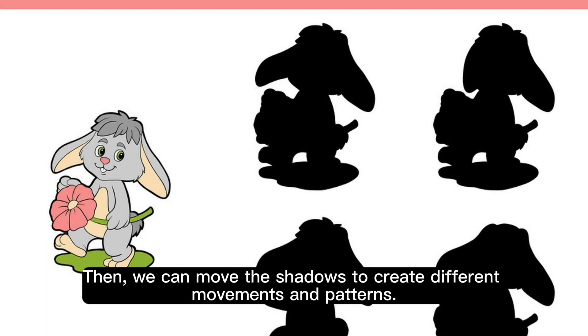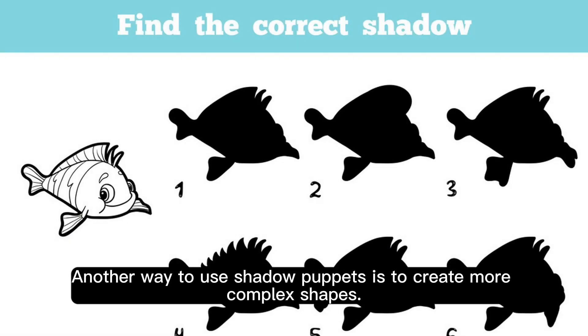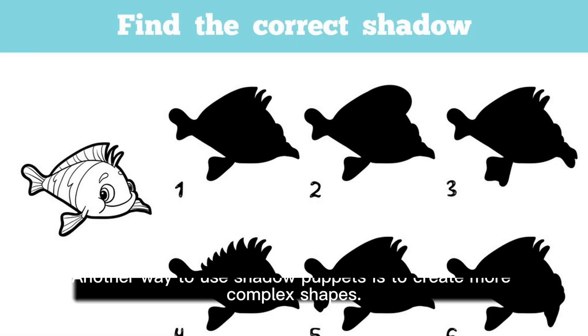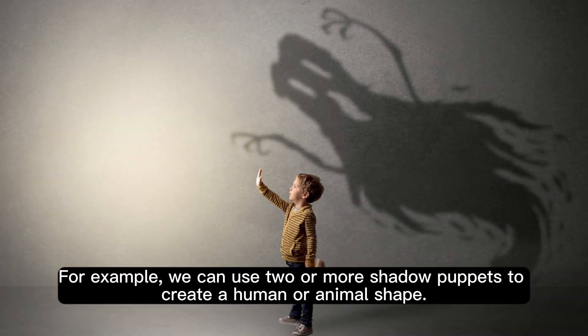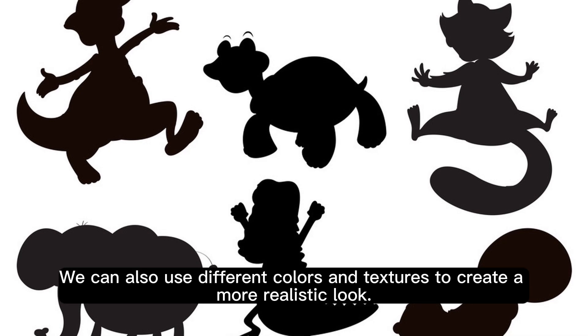Then, we can move the shadows to create different movements and patterns. Another way to use shadow puppets is to create more complex shapes. For example, we can use two or more shadow puppets to create a human or animal shape. We can also use different colours and textures to create a more realistic look.